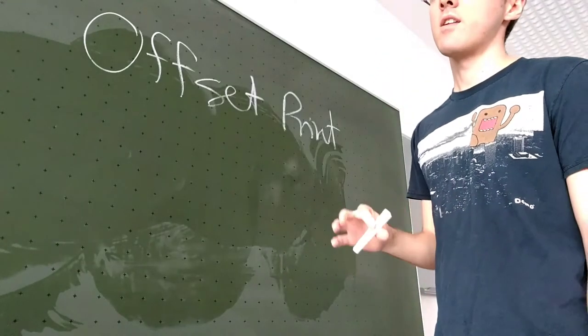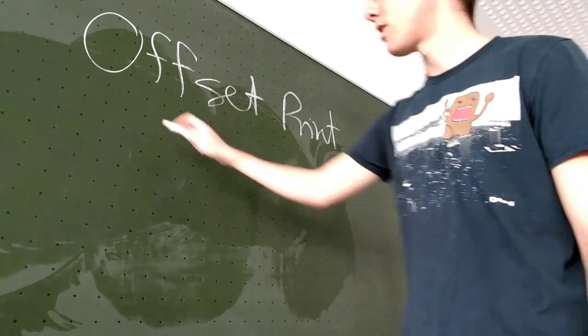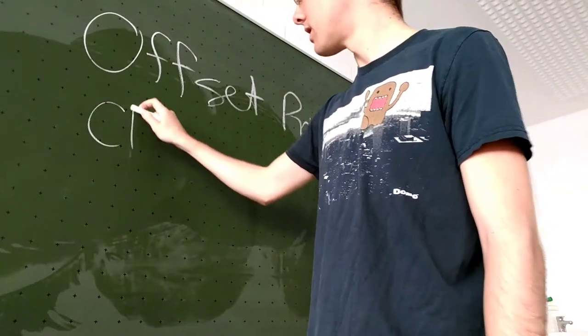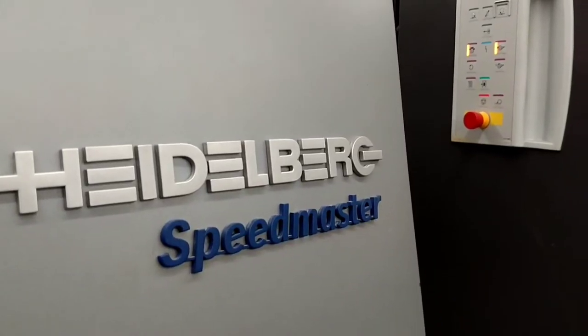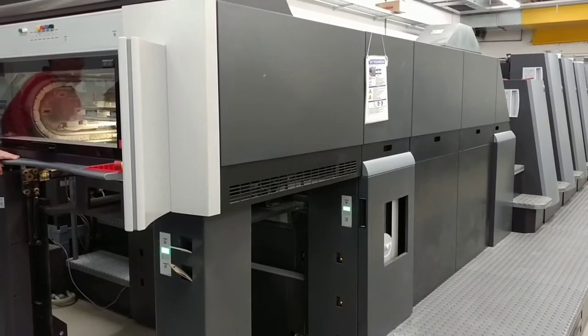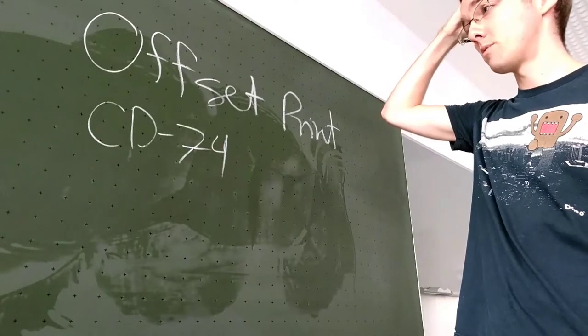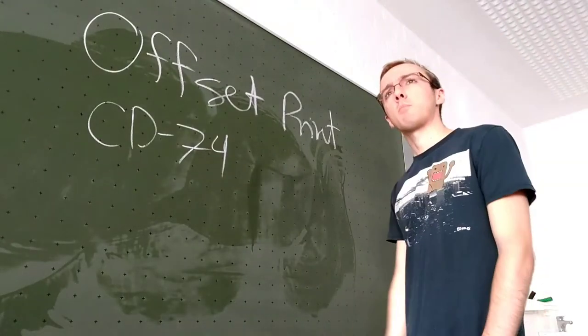Firstly, you're going to see that this is called a CD, a CD-74. It's a Heidelberg CD-74 machine, a Heidelberg Speedmaster, and it prints up to 10,000 sheets per hour.